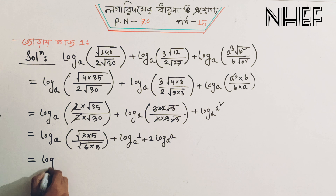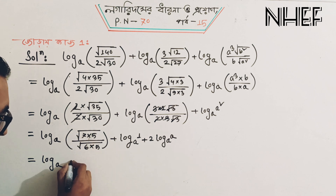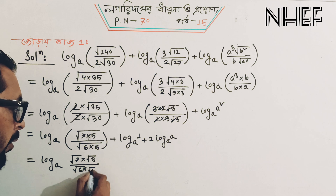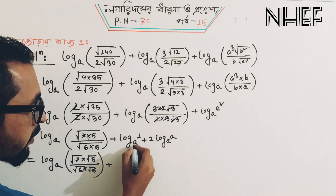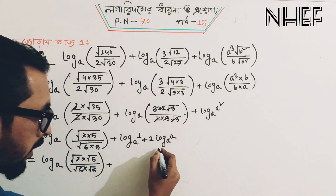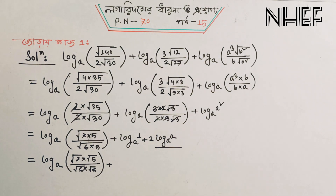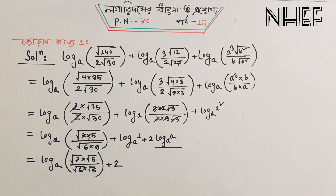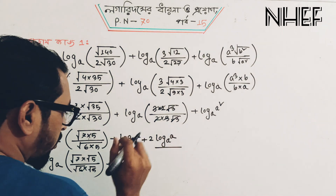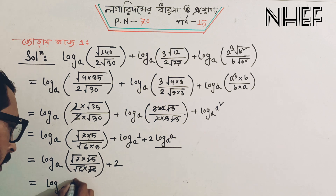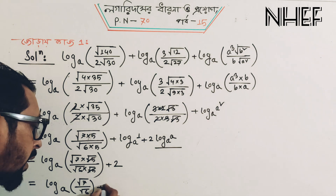Let's write log a base. If you want to write root over 7 divided by root over 5, divided root over 6, divided root over 5 — well, log a base 1 means 0. Now you can write log a base 2. Log a base means 2 on the average line. For another line: equal to log base a of (root over 7 divided by root over 6) plus 2.